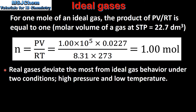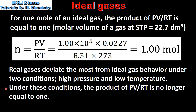Real gases deviate the most from ideal gas behavior under two conditions: high pressure and low temperature. Under these conditions the product of PV divided by RT is no longer equal to 1.